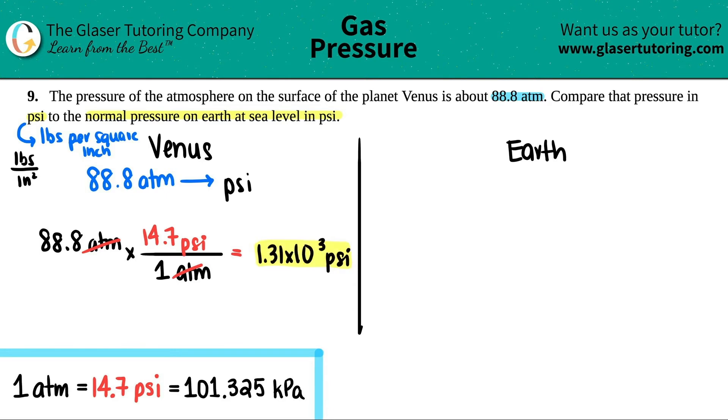Now we have to do the same thing for earth. They say compare that pressure in PSI to the normal pressure on earth at sea level. They didn't give us a number. We have to memorize it. The only amount that you probably have to memorize is what is the pressure at sea level. And it's a very easy pressure. Sea level literally means at the sea. So if you live by the coast, that's your pressure. You're at sea level.